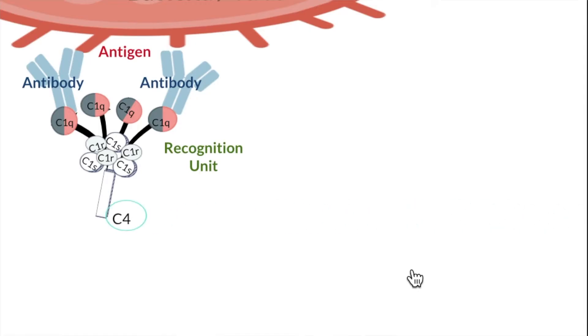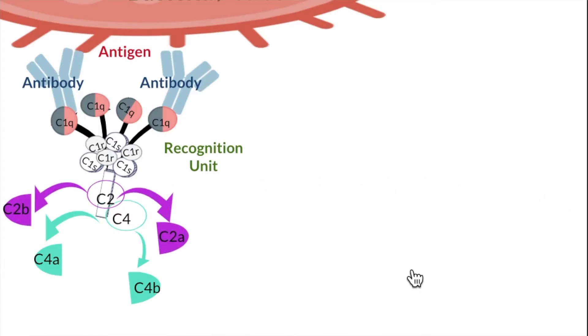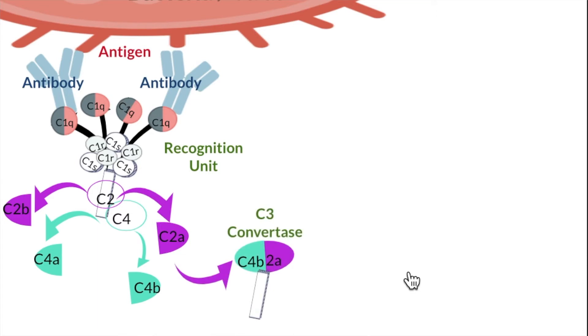So the C1QRS forms, and then after that it cleaves the C4 and C2 proteins, which are just floating around our bodies. After it cleaves C4, it produces C4A and C4B. C4B goes on to form the activation unit. For the next protein, C2, it also gets cleaved into C2A and C2B. For the next stage, we only need C2A.